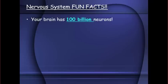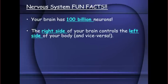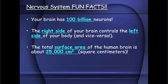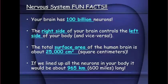Here are some nervous system fun facts. Your brain has 100 billion neurons. The right side of your brain controls the left side of your body, and vice versa. The total surface area of the human brain is about 25,000 square centimeters. If we lined up all the neurons in your body, it would be about 965 kilometers — that's 600 miles — long.